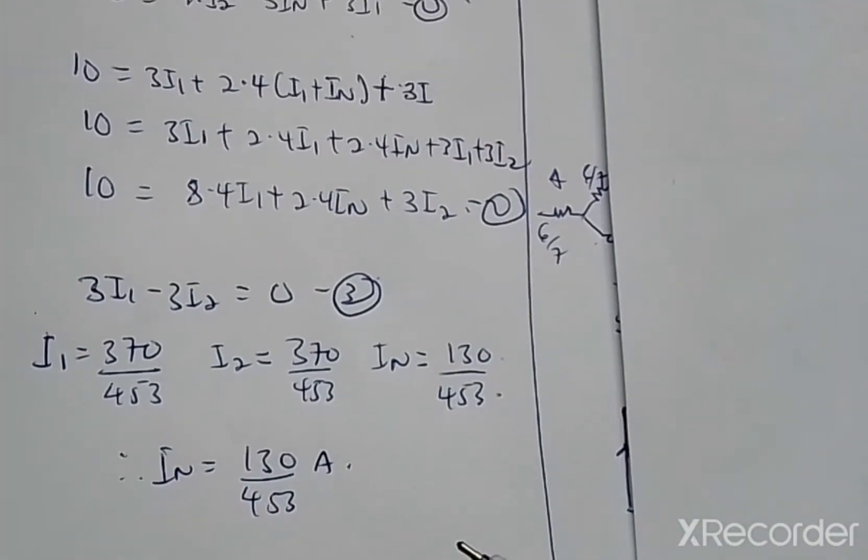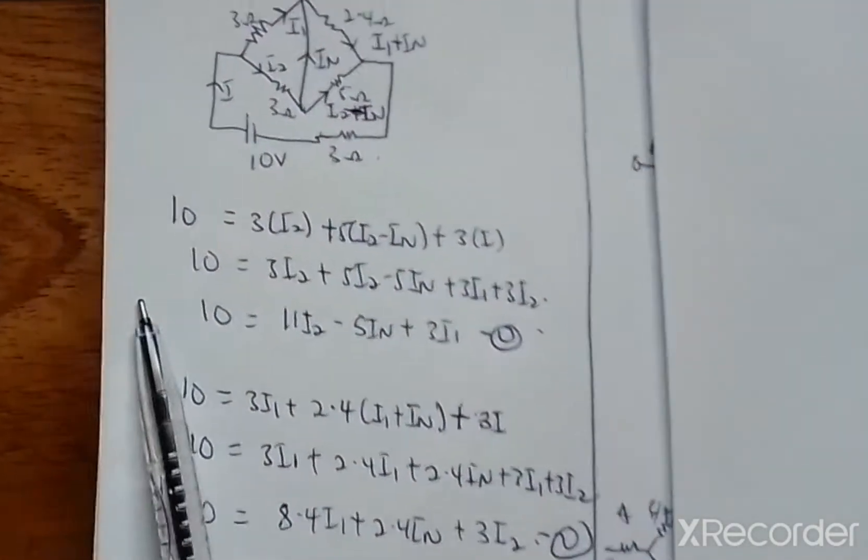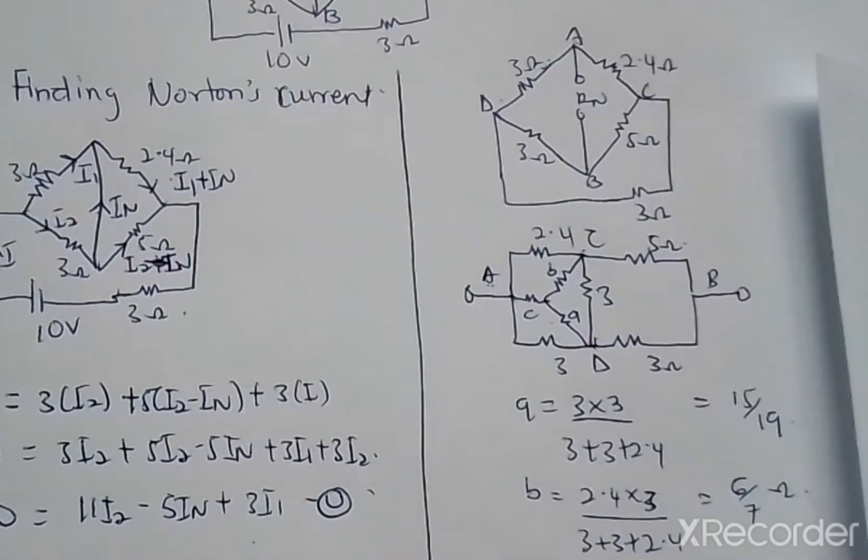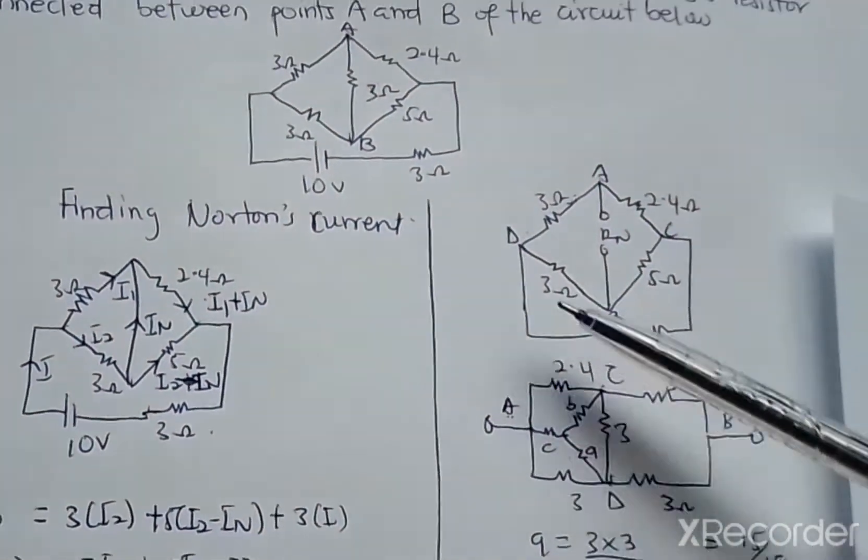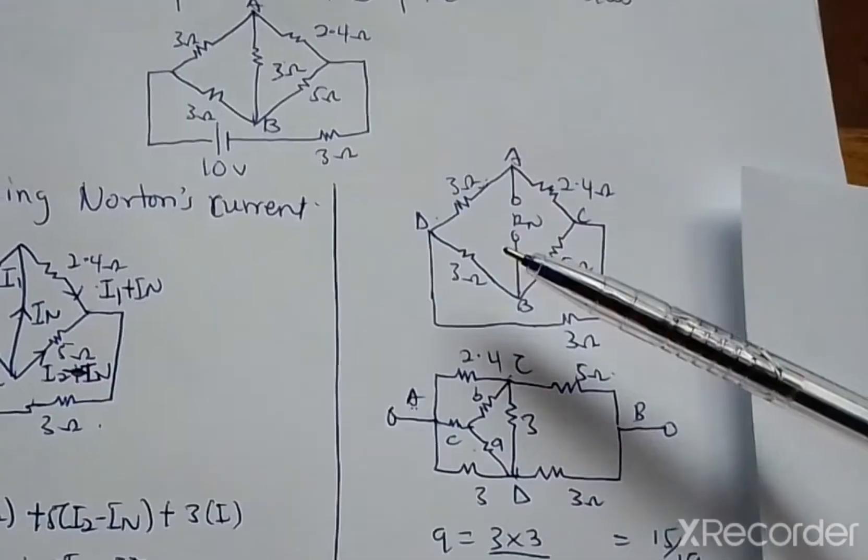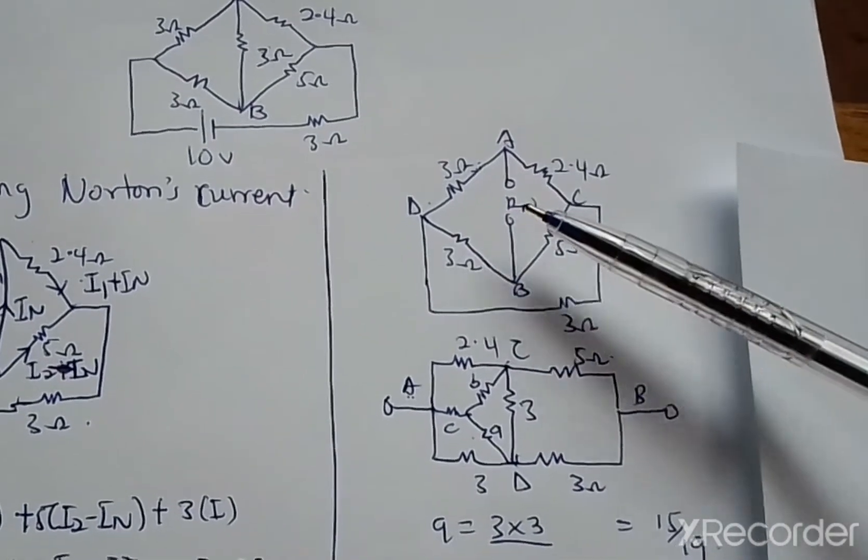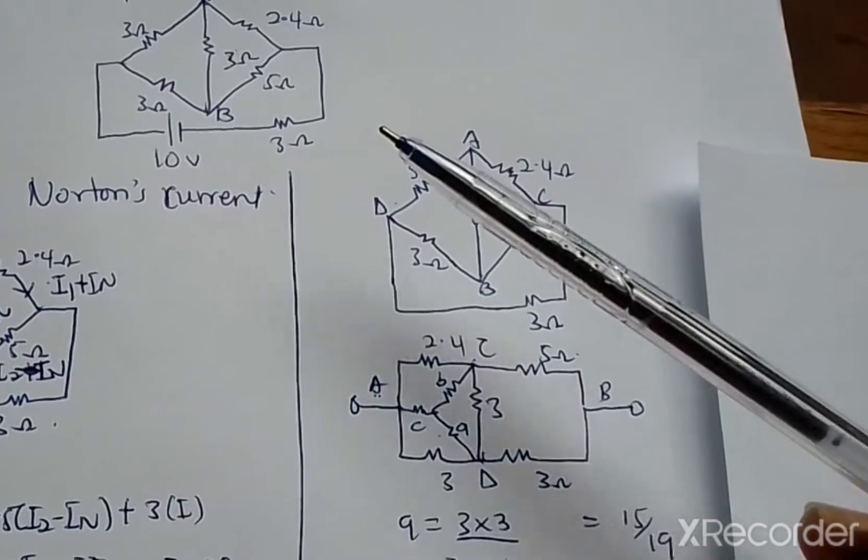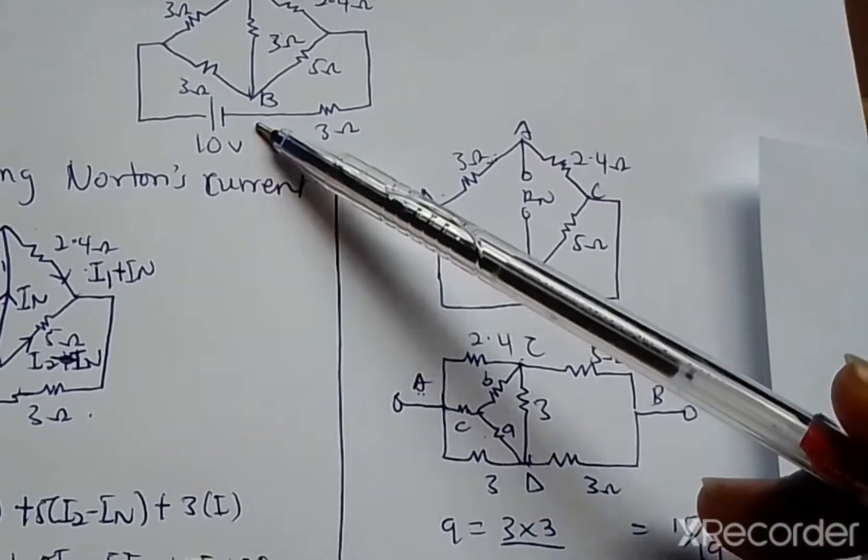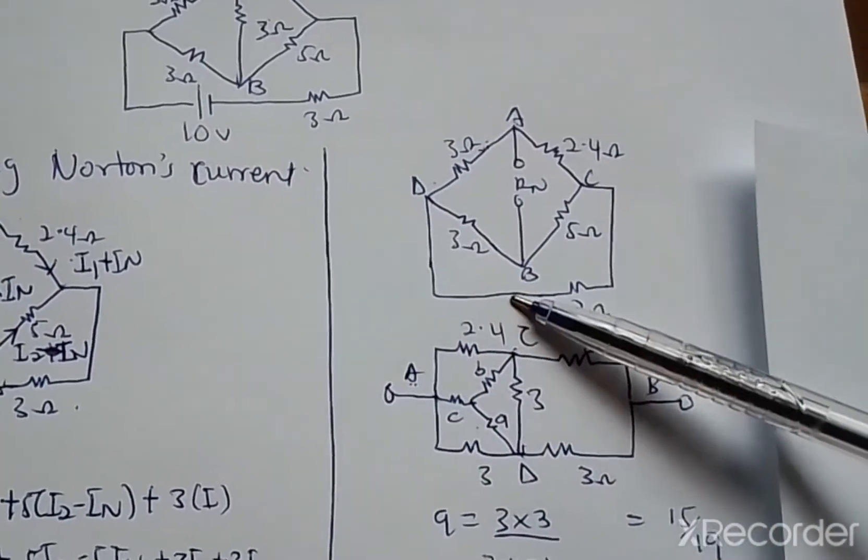This is our IN value. Now let's go and find the Norton resistance, RN. To find RN you have to redraw the circuit and remove the 3-ohm resistor and replace it with a Norton resistance.